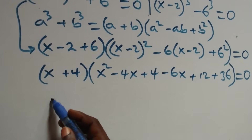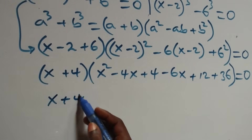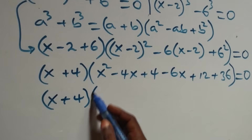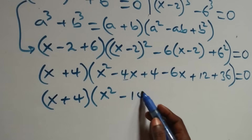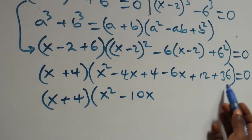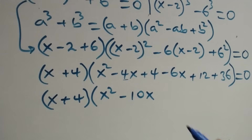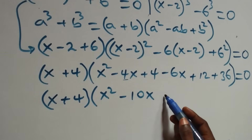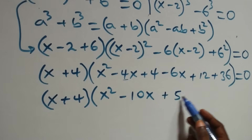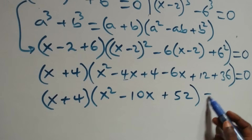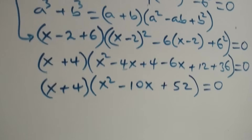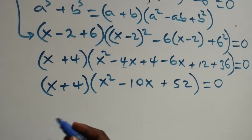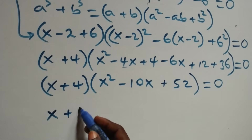This becomes x plus 4 into brackets, then open brackets x squared minus 4x minus 6x — that is minus 10x — then 36 plus 12 plus 4 gives us plus 52, close brackets, then equals to zero. We have two possible cases: x plus 4 equals to zero,